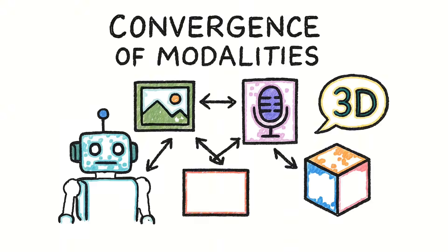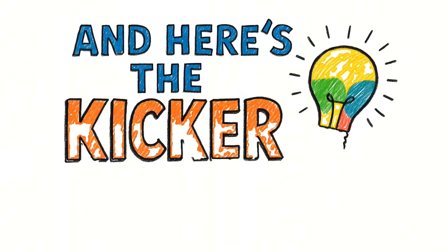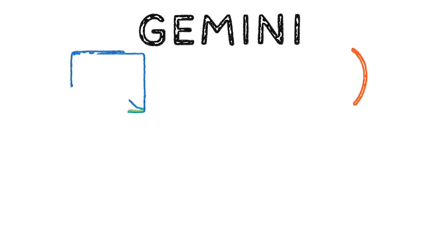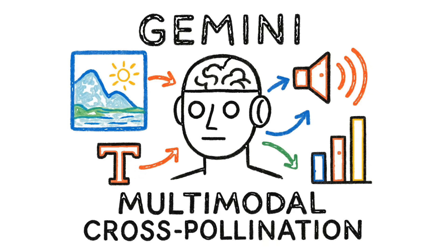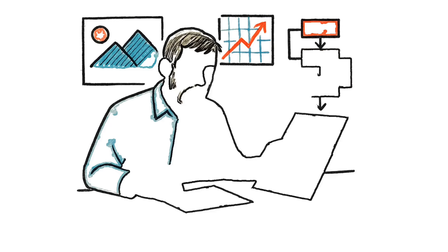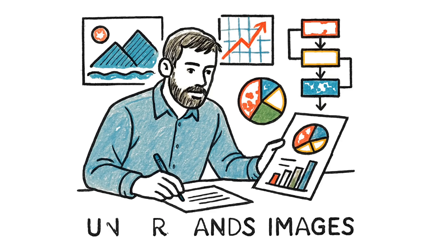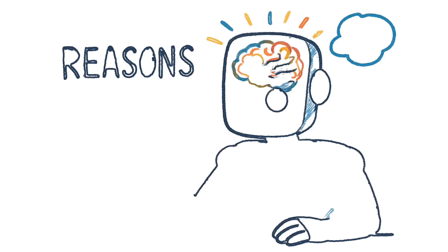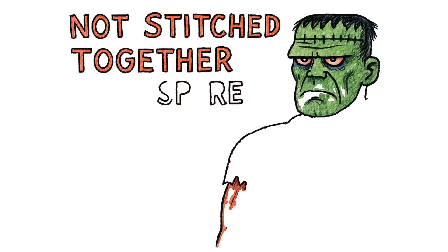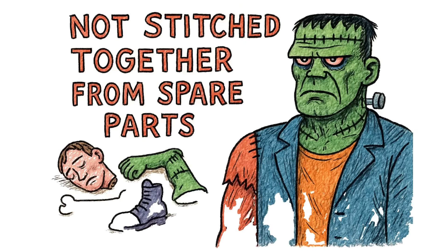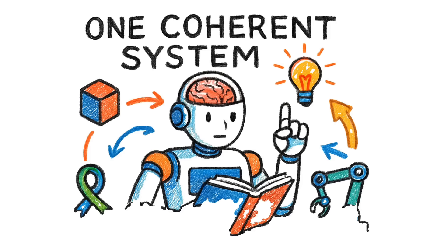He calls it convergence of modalities. I call it AI finally growing up. And here's the kicker. Because Gemini was trained multimodally from day one, it's already showing what Hassabis calls cross-pollination. The image system doesn't just draw pretty pictures. It understands them well enough to create accurate infographics and diagrams. The robot brain doesn't just move. It reasons before it acts. This isn't Frankenstein's monster stitched together from spare parts. This is one coherent system that's learning to do everything.